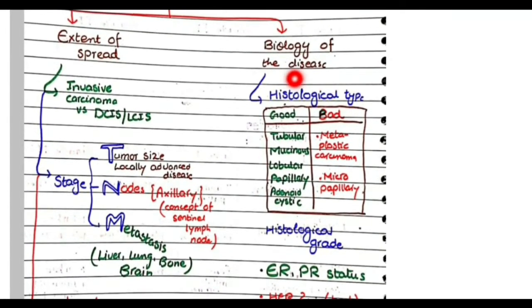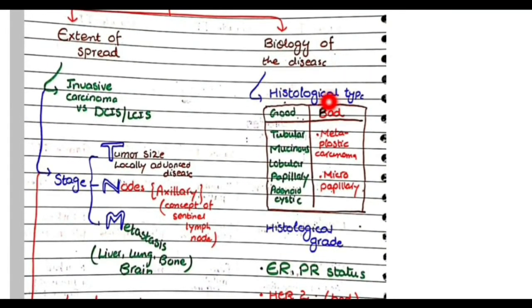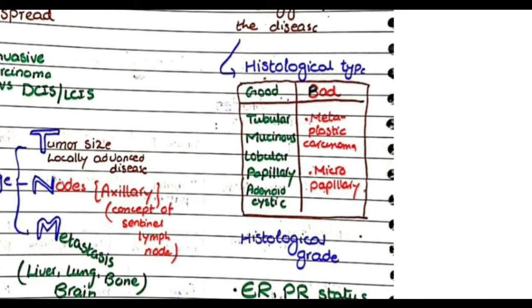Now let's discuss the second category, which is the biology of the disease. The first thing that matters is the histological type. We discussed several histological types in our morphology section.